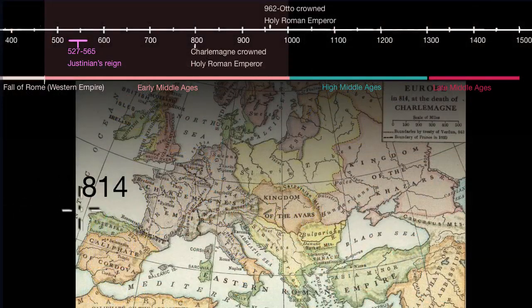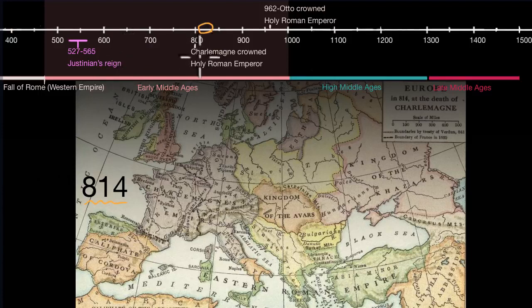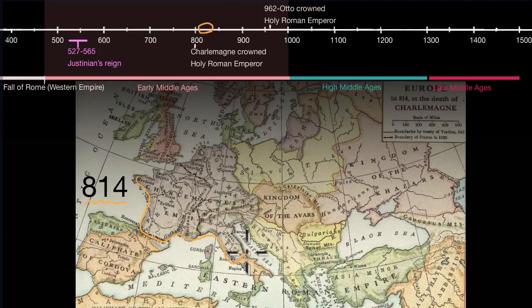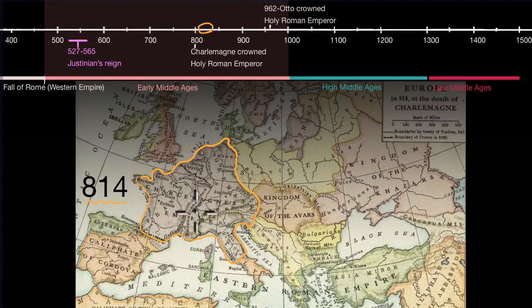Fast forwarding to the year 814, a major event has occurred: Charlemagne, king of the Franks, is crowned Holy Roman Emperor. On the map, you can see Charlemagne's empire — he has conquered northern Italy, much of modern-day France, much of modern-day Germany, Switzerland, the Netherlands, and Belgium. Charlemagne is really one of the defining figures of the Middle Ages, and especially the Early Middle Ages.